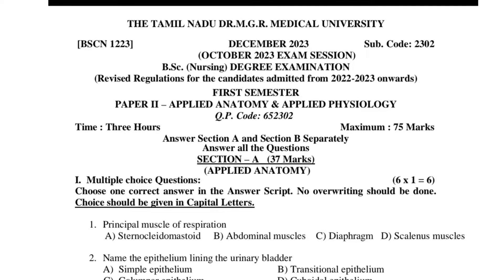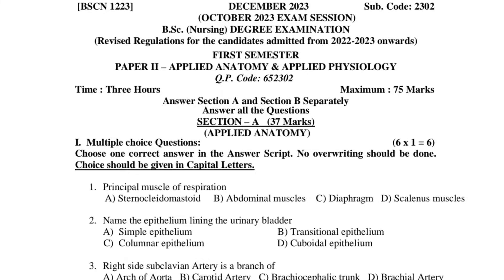Answer Section A and Section B separately in different answer booklets. You have to answer all the questions. Section A carries 37 marks, out of that multiple choice questions will be 6 — 6 into 1 mark each, equal to 6 marks. Choose one correct answer in the answer script. No overwriting should be done. Answer only in capital letters.